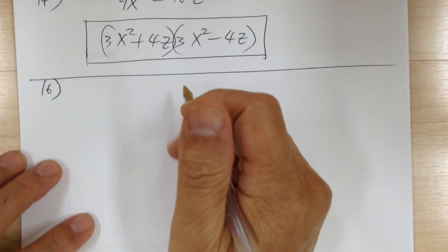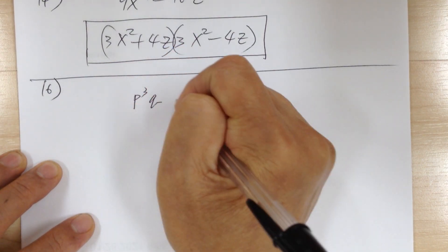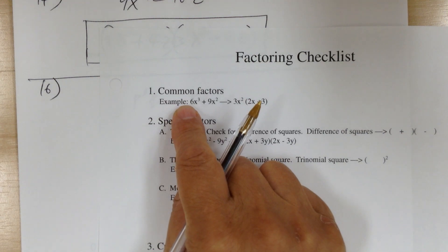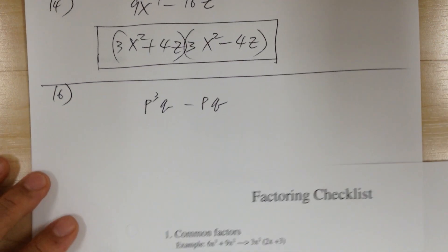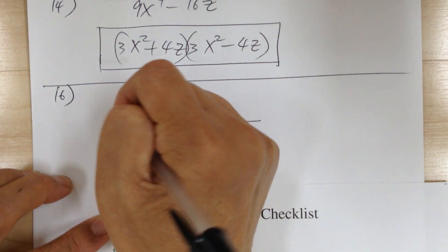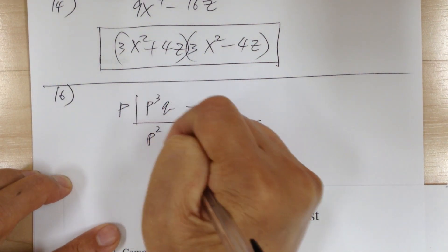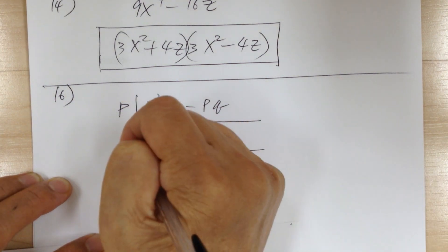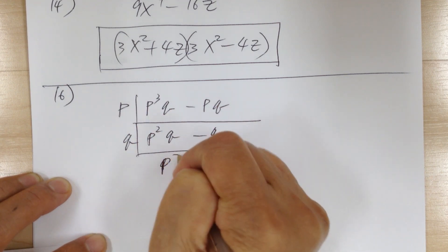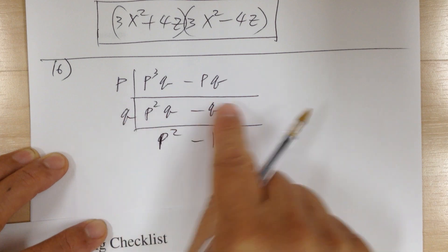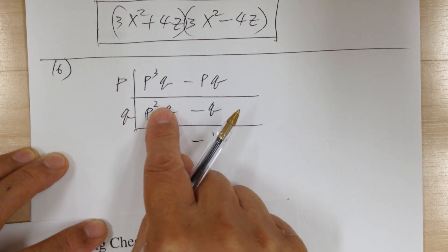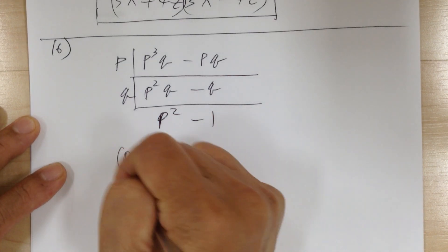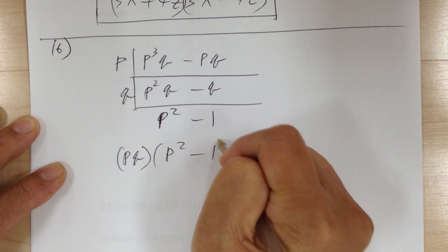Number 16: you have p³q - pq. Step 1, common factor — factor out p. You get p(p²q - q). Then factor out q: pq(p² - 1). Check: this times this gives you that. That's step 1 done. You get pq(p² - 1). Now go to step 2 for the remaining factor (p² - 1). That's a square minus a square — difference of squares — so break into conjugates.